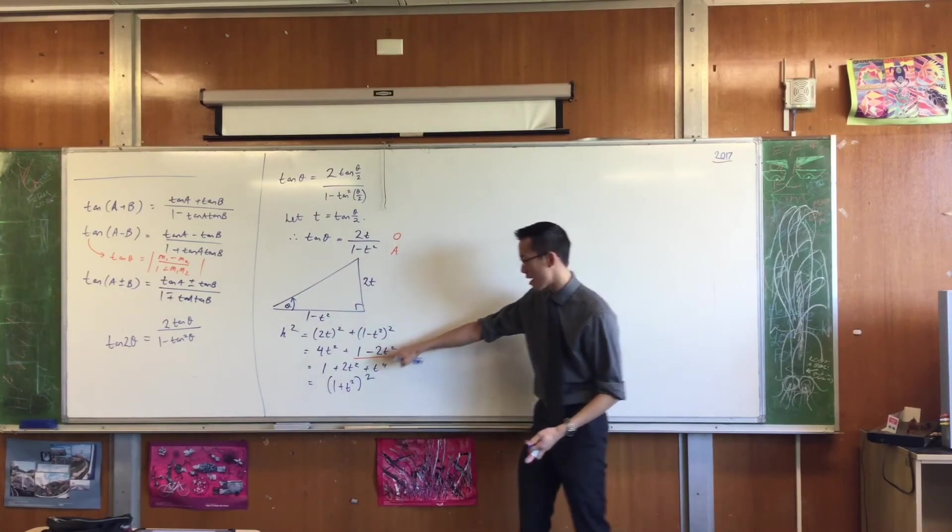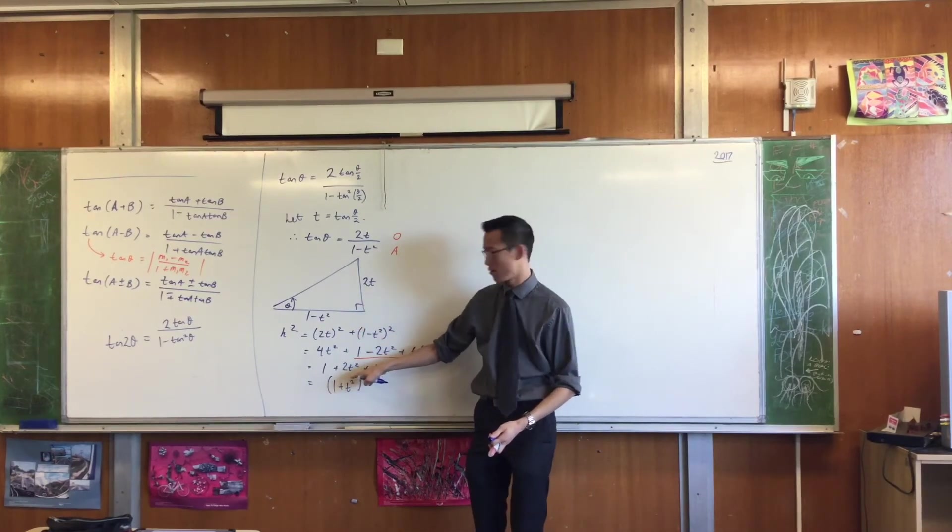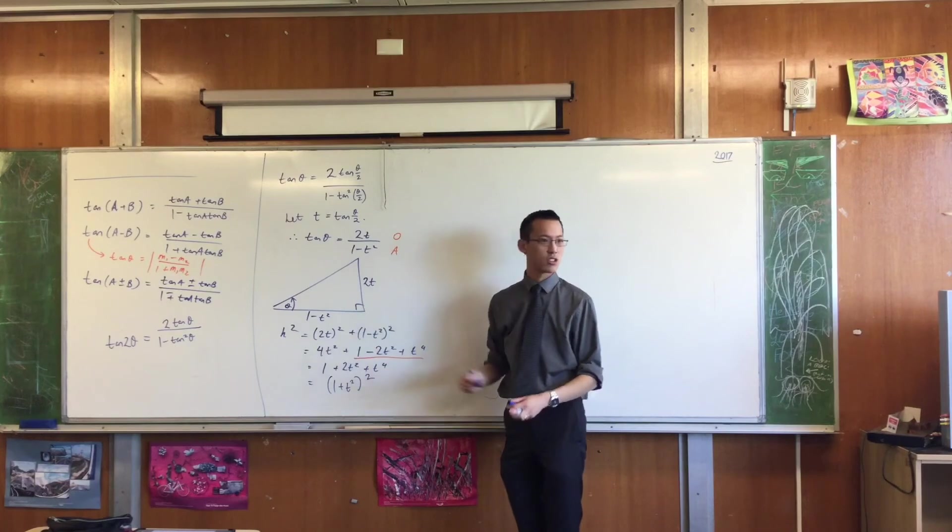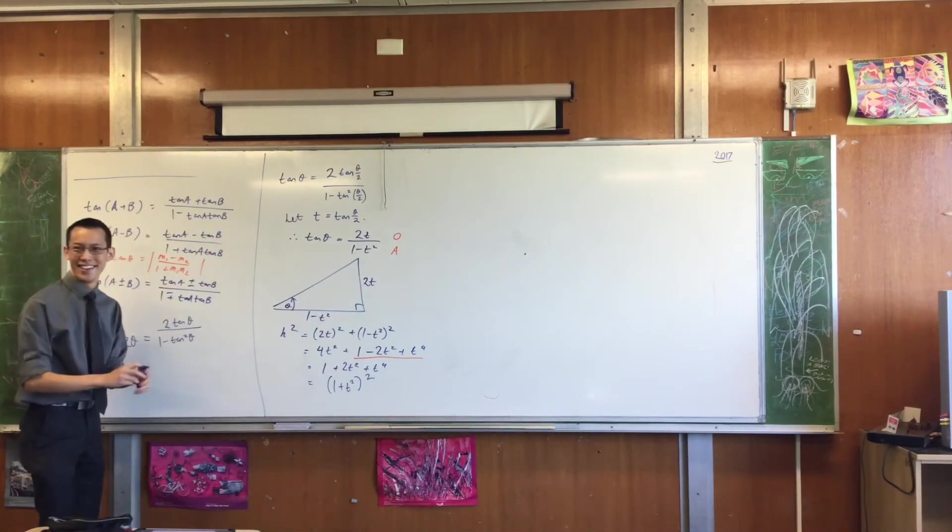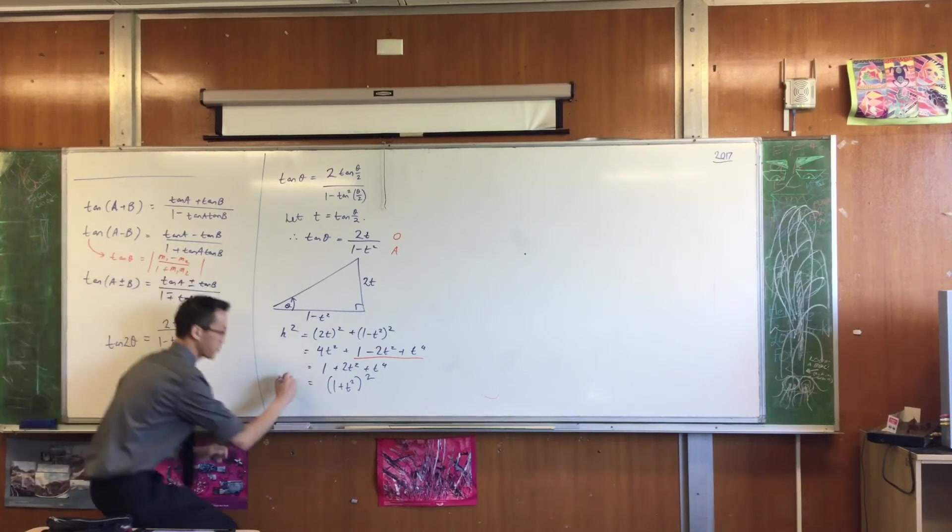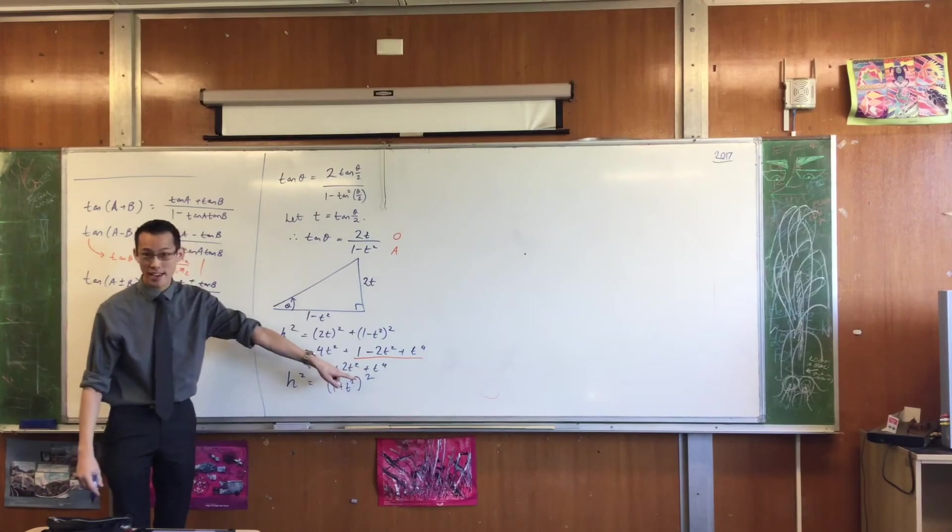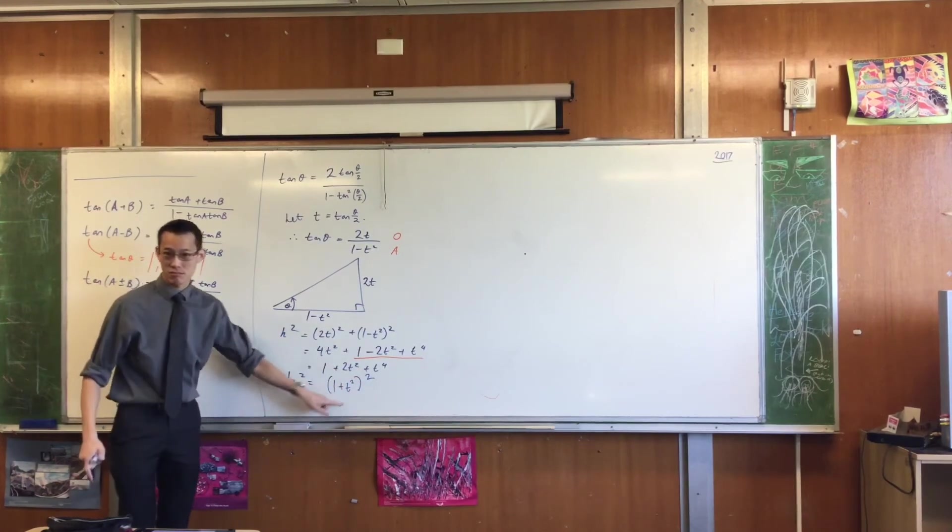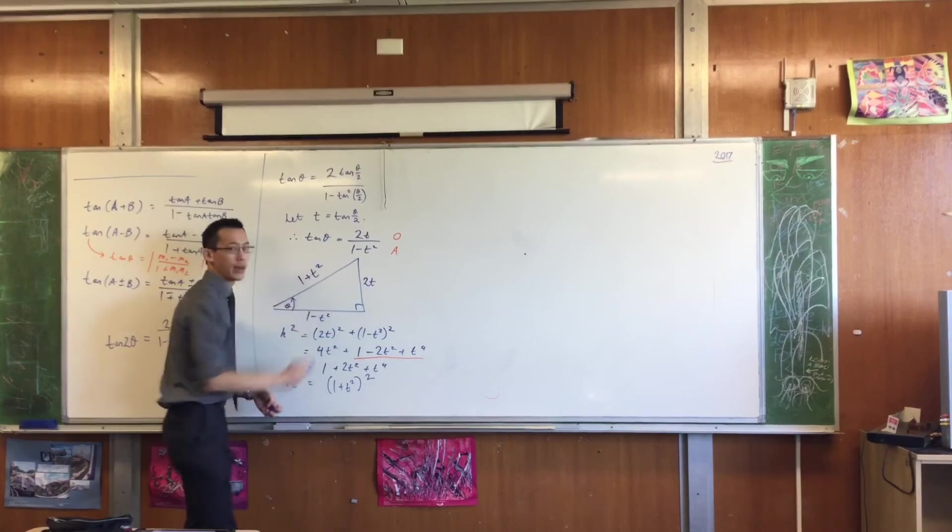Like, the only difference between this guy and this guy is that minus 2T² is now a plus 2T². Well, that would work if I just changed the sign a little bit. What am I solving? I'm trying to find the hypotenuse, right? Well, if the hypotenuse squared is that squared, then the hypotenuse is just the thing inside the brackets. 1 + T². Do you agree?